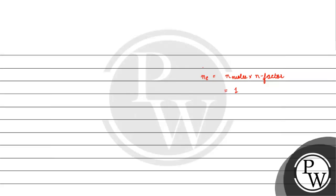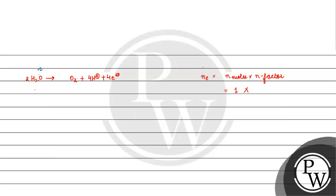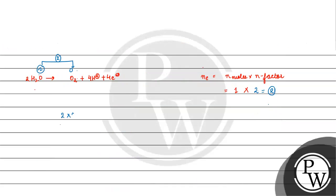Number of moles is 1. For N-factor, we use the half-reaction: 2H₂O → O₂ + 4H⁺ + 4e⁻. The oxidation state of oxygen changes from −2 in H₂O to 0 in O₂, giving a change of 2, so N-factor = 2. Therefore, number of equivalents = 1 × 2 = 2, and charge = 2 × 96,500 coulombs.